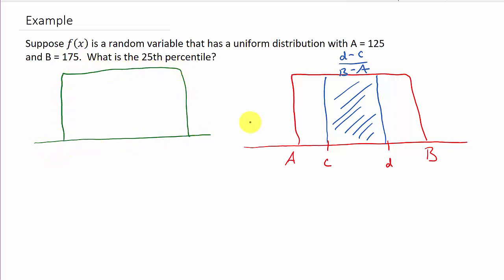So this is A, this is B. We know A is 125, B is 175, and what are we looking for? We're looking for the 25th percentile. So we're looking for the area of 0.25.